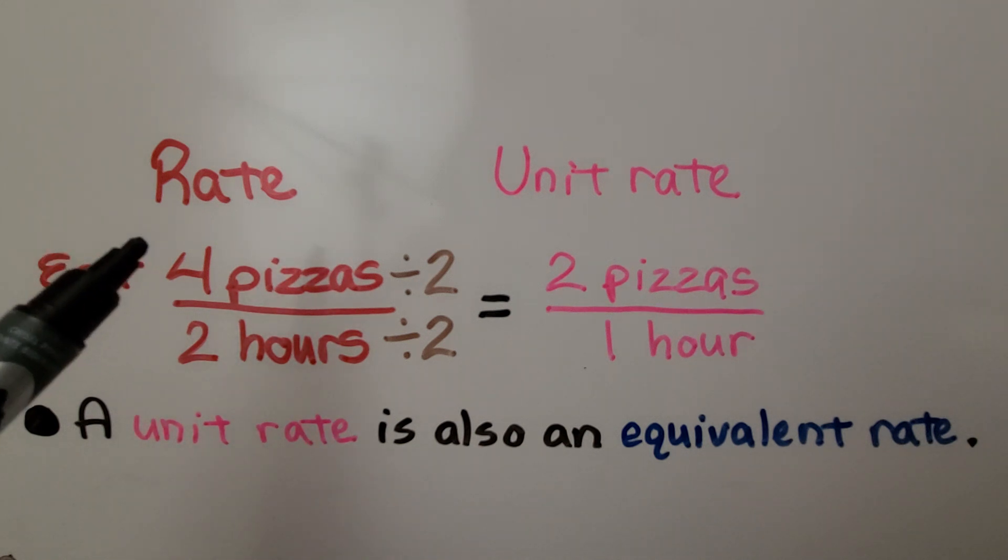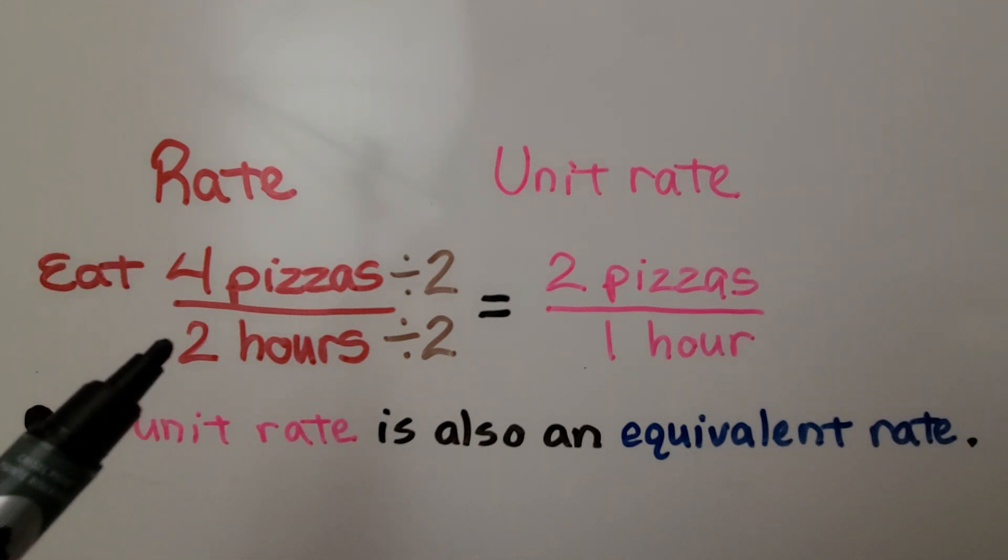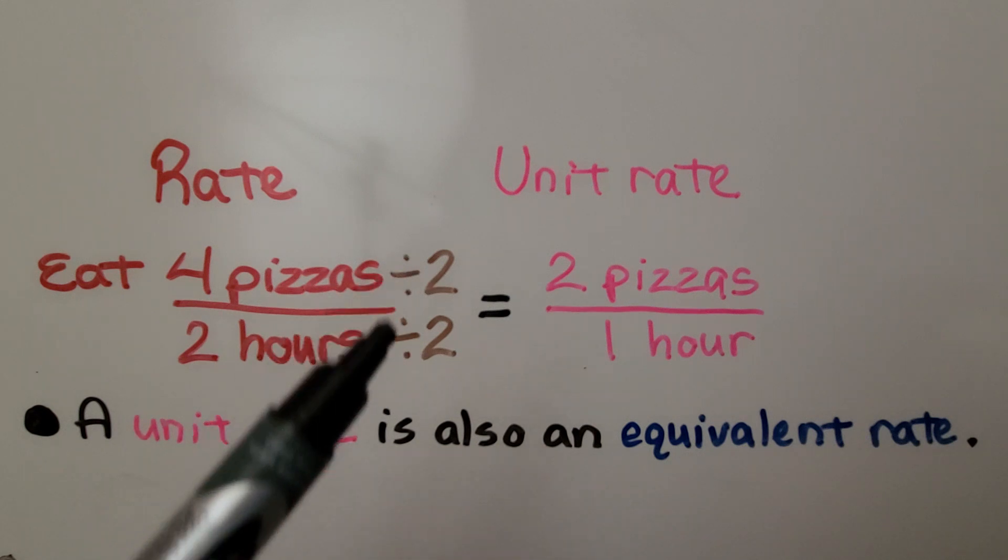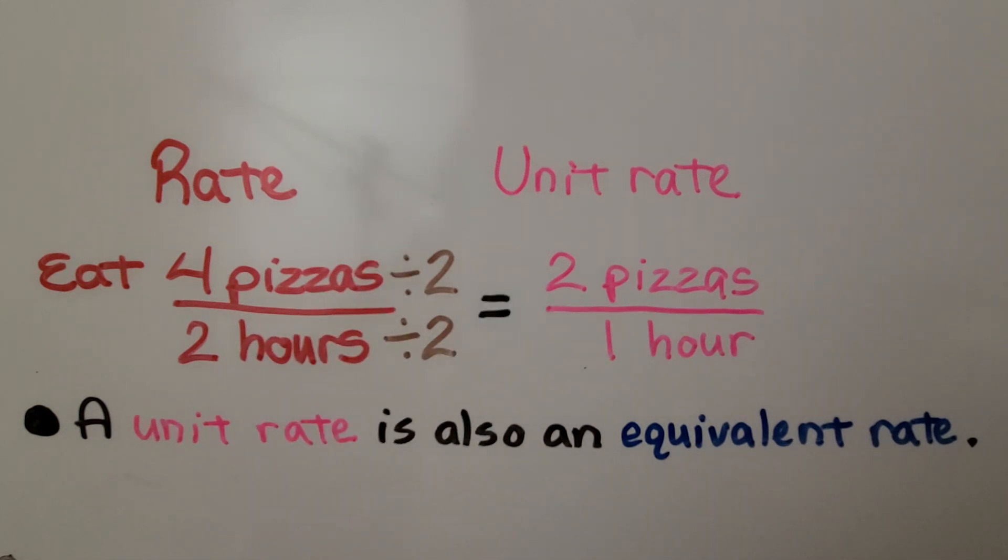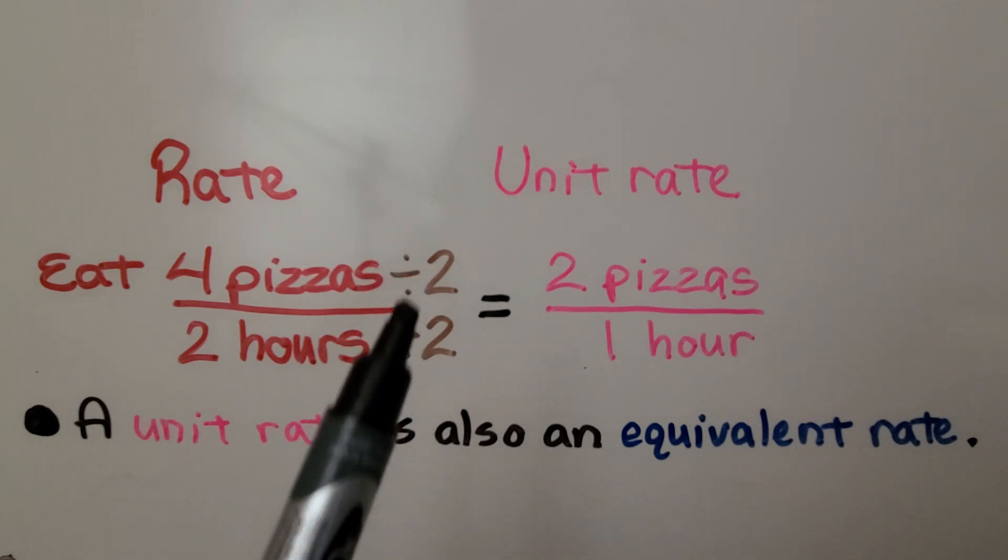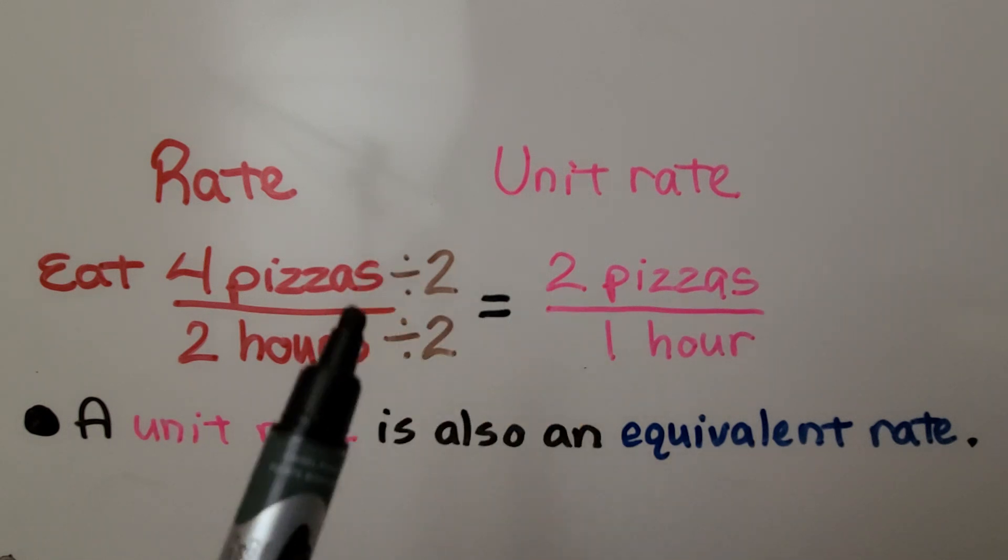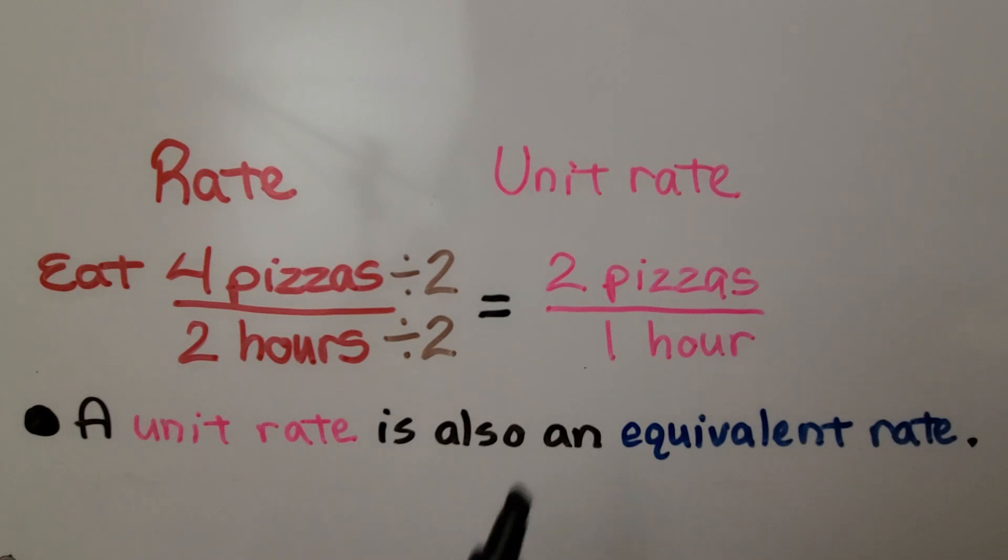If we can eat four pizzas in two hours and we divide both terms by the same number, we should be able to eat two pizzas in one hour. This is a unit rate because there's one unit, one hour. A unit rate is also an equivalent rate. When we divide both terms by the same number, we get an equivalent rate, and in this case, it's a unit rate.